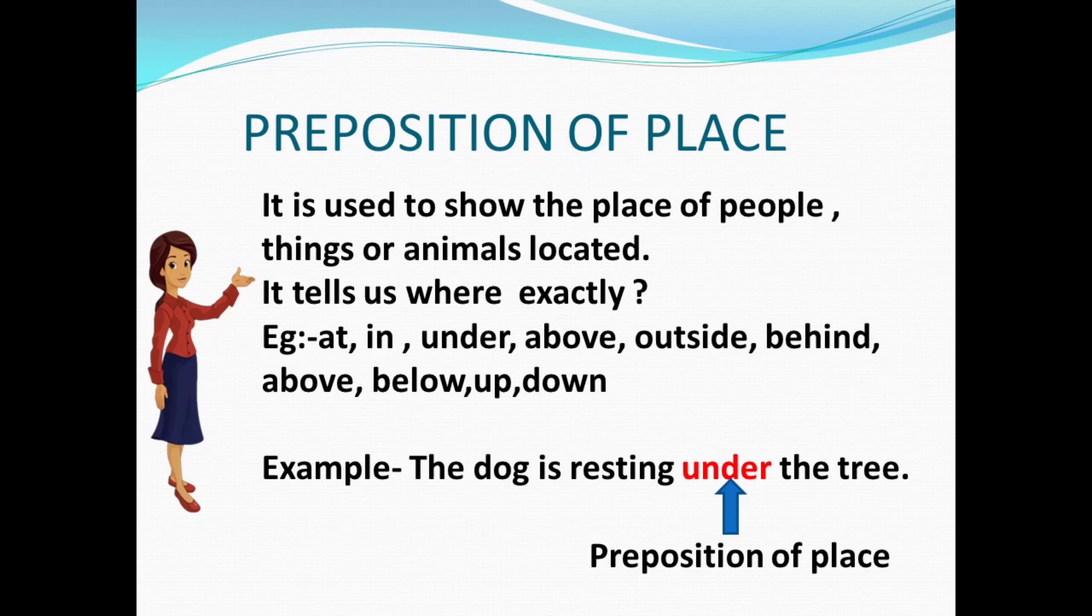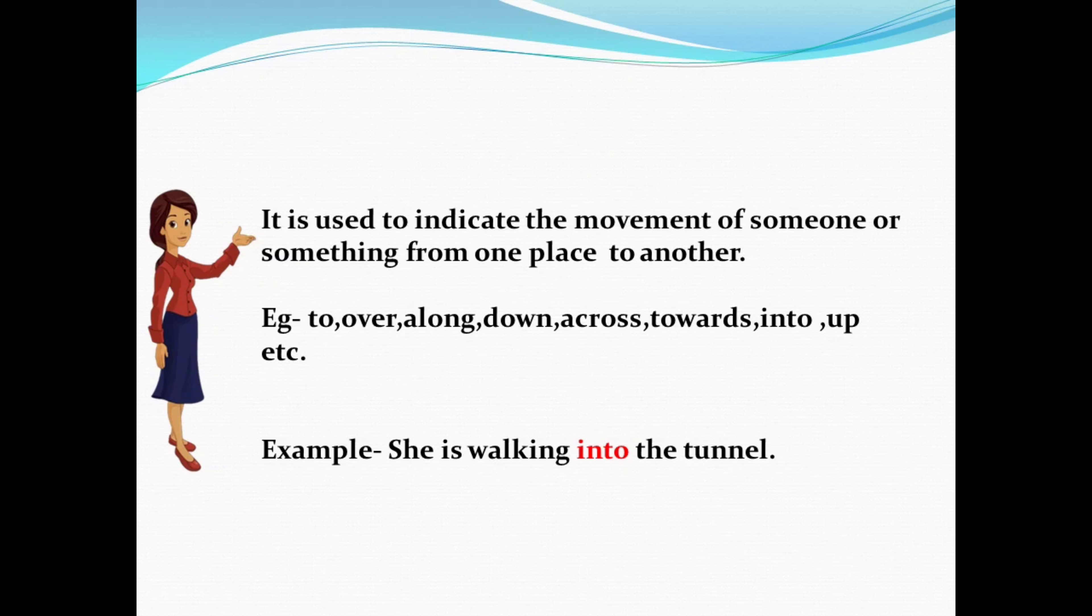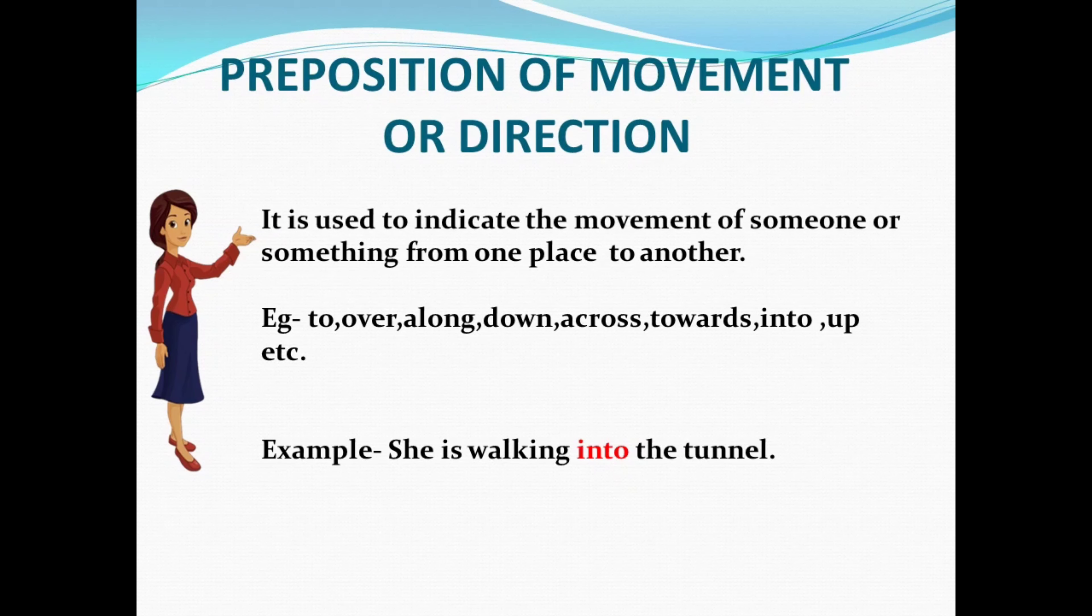Now the last part of the preposition is the movement or direction. It is the preposition of movement or direction. It means it is used to indicate the movement of someone or something from one place to another. Some of the examples are to, over, along, down, across, towards, into, up, etc. One of the examples which you can frame is 'She is walking into the tunnel,' 'He was crossing across the river,' 'He was going towards the school.' In this way you can frame the sentence with the help of preposition of movement or direction.